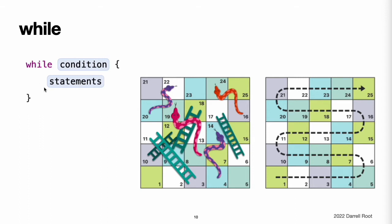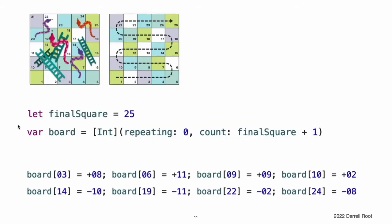This example plays a simple game of snakes and ladders, also known as chutes and ladders. The board has 25 squares, and the aim is to land on or beyond square 25. The player's starting square is square zero, just off the bottom-left corner of the board. Each turn, you roll a six-sided die and move by that number of squares. If your turn ends at the bottom of a ladder, you move up that ladder. If your turn ends at the head of a snake, you move down the snake. The game board is represented by an array of integer values, its size based on a constant called final square.